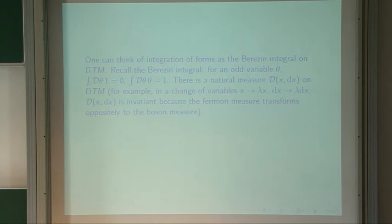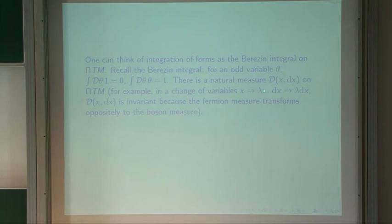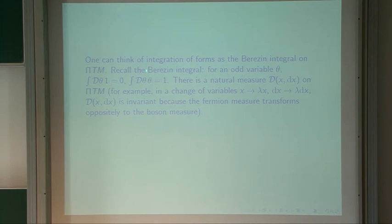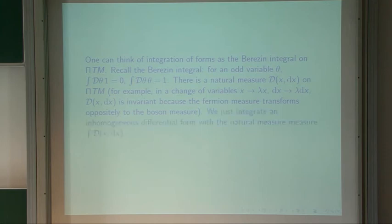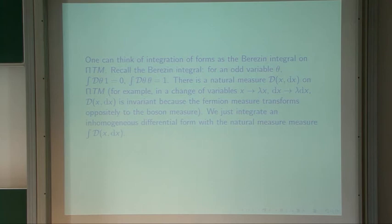An important consequence of the Berezin integral is the following. If you change variables — for simplicity consider one variable x with a linear change to lambda times x — then dx goes to lambda times dx. But Berezin's formula ensures that d-theta transforms oppositely to theta, because the integral d-theta of theta is one. So the measure for integrating over both x and dx is invariant, where the measure for dx transforms oppositely to the measure for x. Although there's no natural measure on M, there is a natural measure on pi(TM). Integration of differential forms is just the integral of a function with the natural measure on pi(TM).